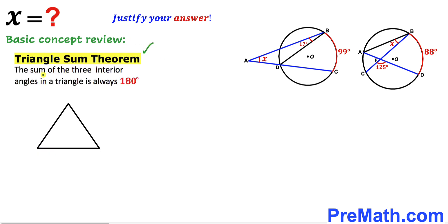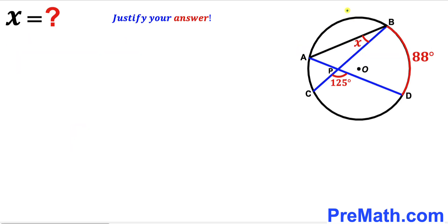Finally, let's recall the triangle sum theorem. According to this theorem, the sum of the three interior angles in a triangle is always 180 degrees. Now we are going to take care of the very first problem. In this diagram we have a circle with a center, along with chords AB, BC, and AD.